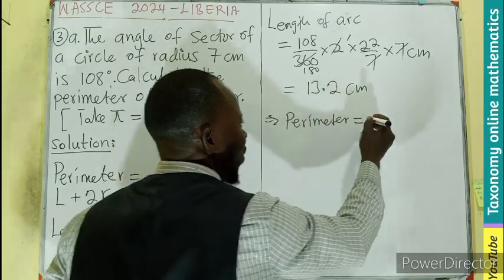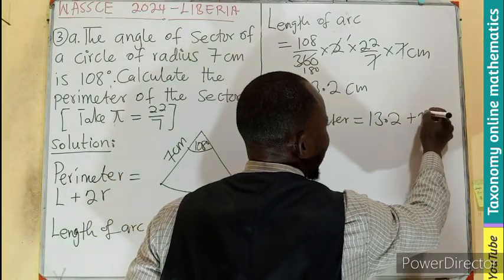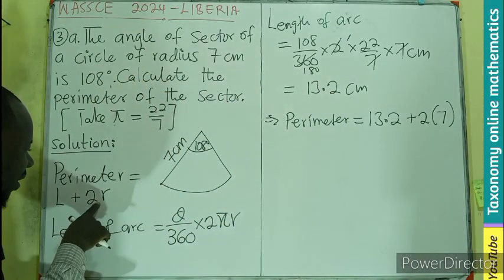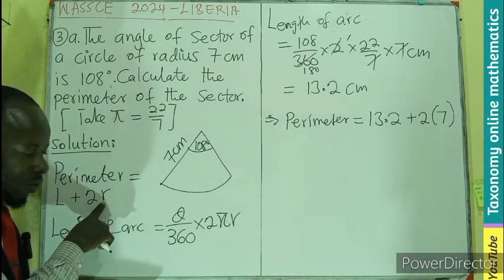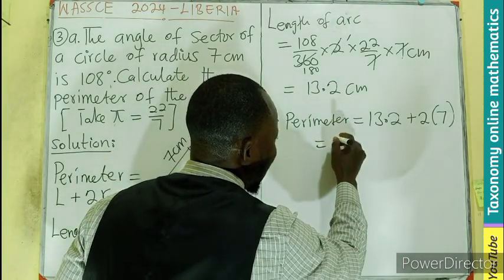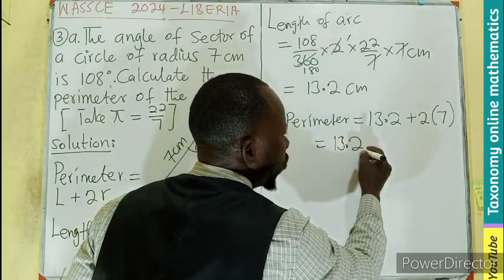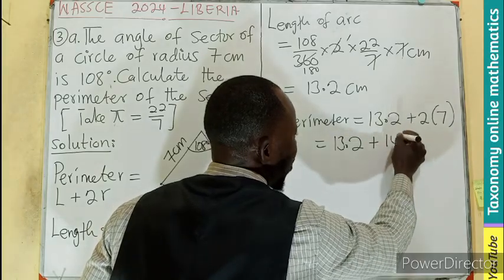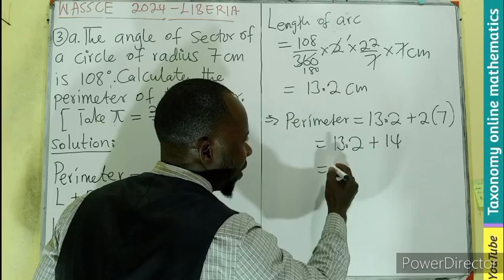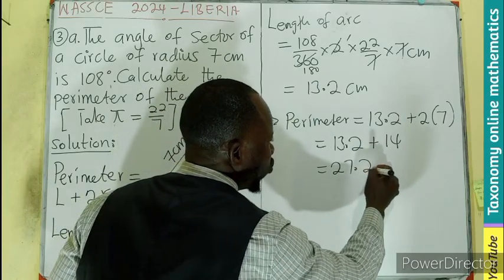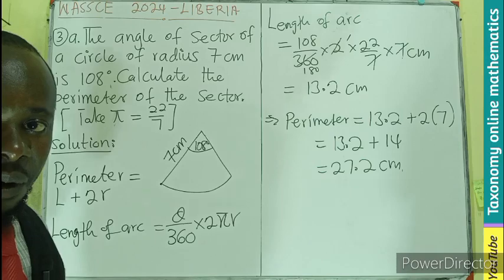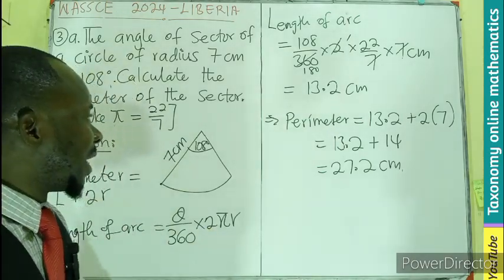The perimeter is going to be this value, 13.2, plus 2 times 7. Why 2 times 7? The radius is 7, so two of the radius. That will mean I'll be having 13.2 plus 14, and that is going to be 27.2 centimeters.